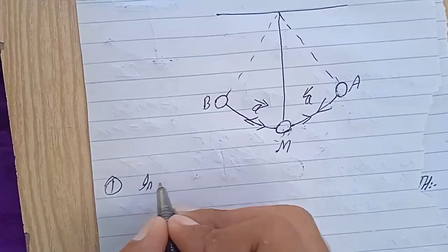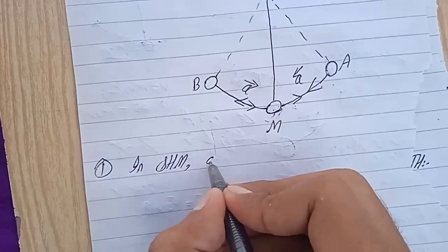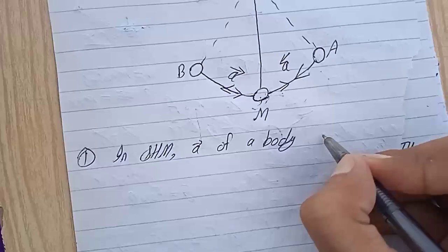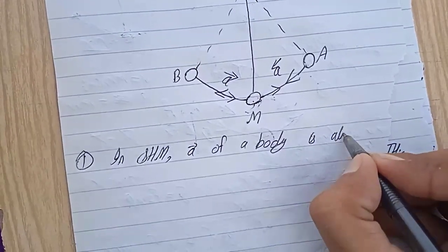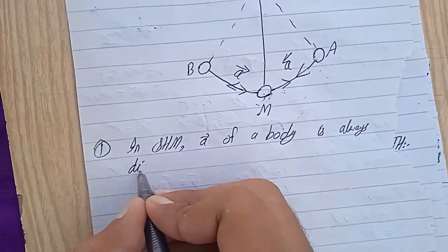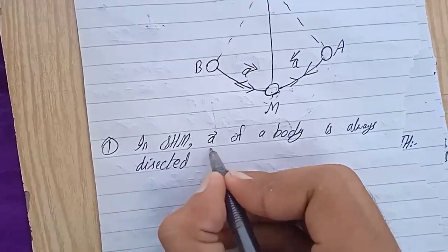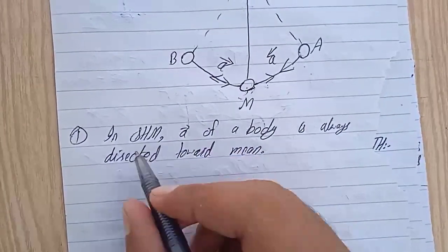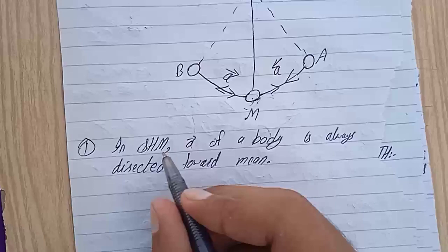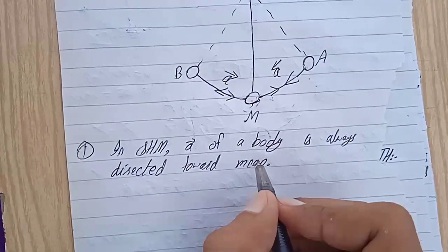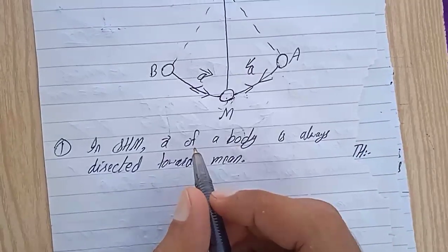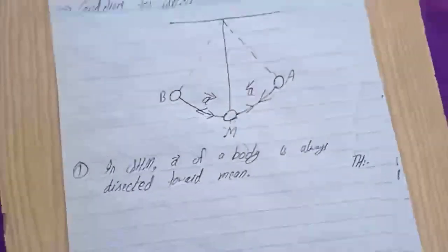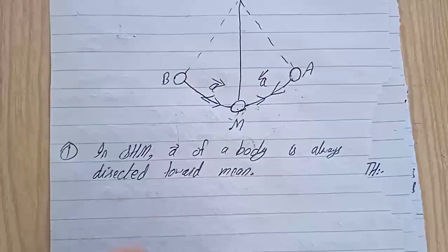So condition 1 is this: In SHM, the acceleration of a body or an object is always directed toward mean position. The point is that in SHM, restoring force, the direction of restoring force is always towards mean. Restoring force is always directed towards mean, so acceleration or restoring force, both are the same. This is your first condition.